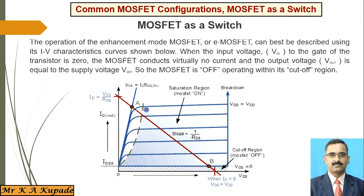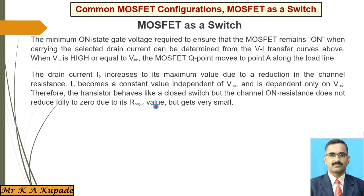It remains in the on position as long as the gate voltage is applied and sufficient. The drain current ID increases to its maximum value due to the reduction in channel resistance, and ID becomes a constant value — it is independent of VDD and depends only on the applied VGS voltage.